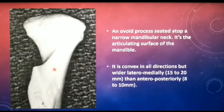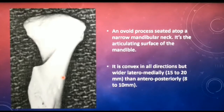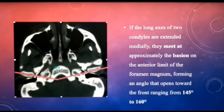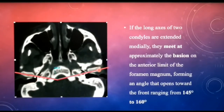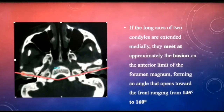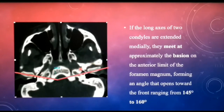The long axis of the condyle is related to the position of the ramus of the mandible and not to the skeleton. The angle formed by the two condylar axes varies between 145 and 160 degrees. This is an axial section of CT showing cross-sections of condyles on both sides, where the two condyles are found to meet at the foramen magnum at an angle of 145 to 160 degrees.